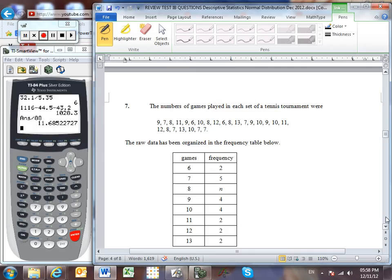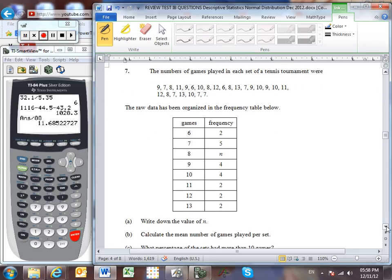On to question number seven. These are the numbers of games played in each set of a tennis tournament, and so all of that data has been organized into this frequency table. We have to first write down the value of n. Well okay, n represents the number of times in which we played eight games in a set. So let's just mark those. One, two, three, four. So clearly, we played eight games in a set four times, so n must be four.